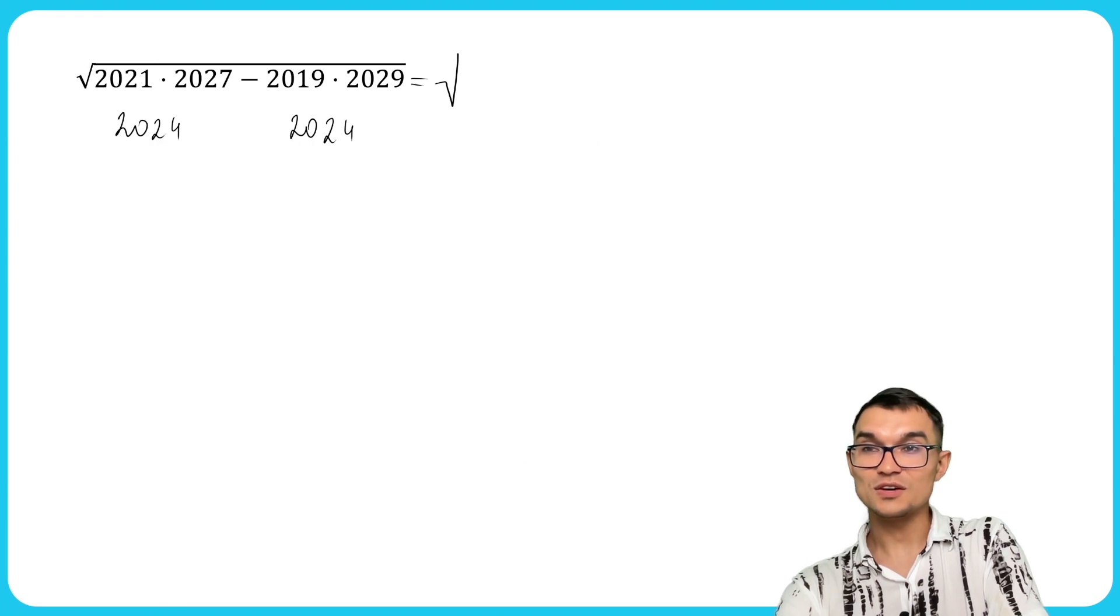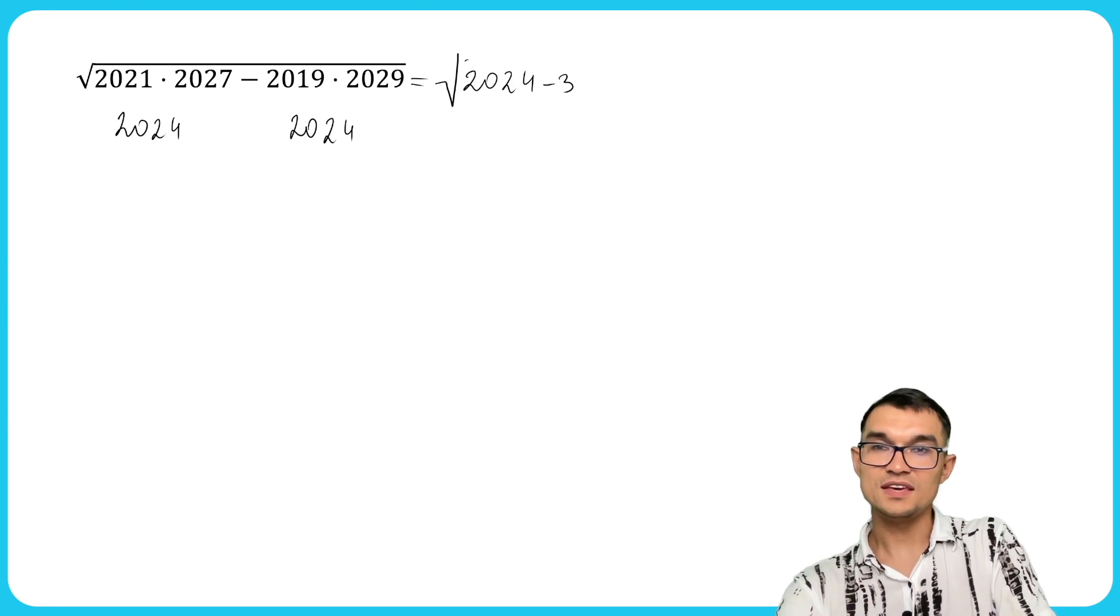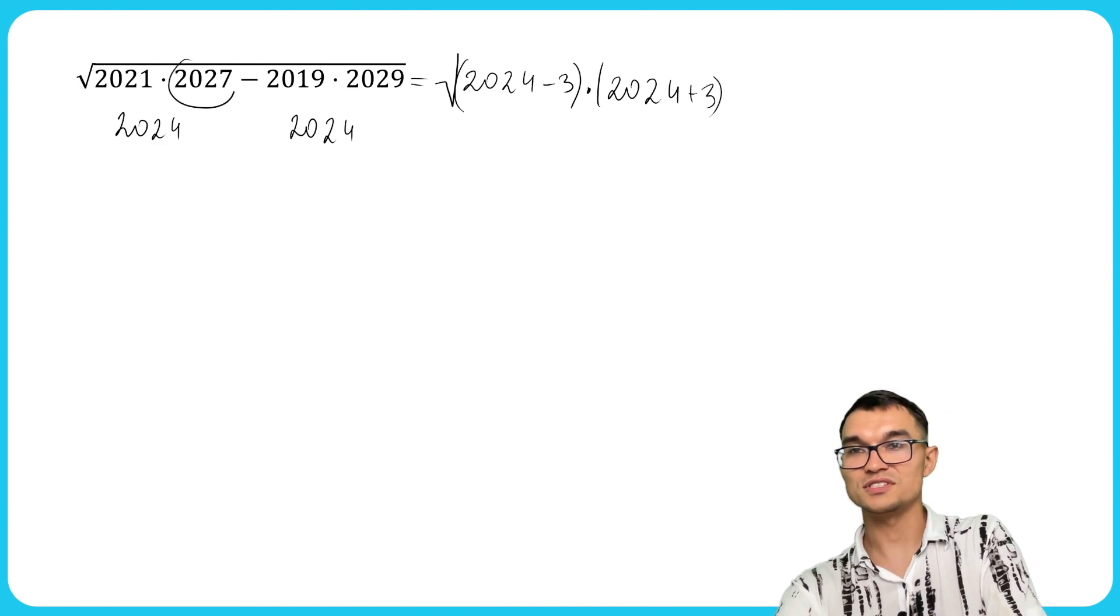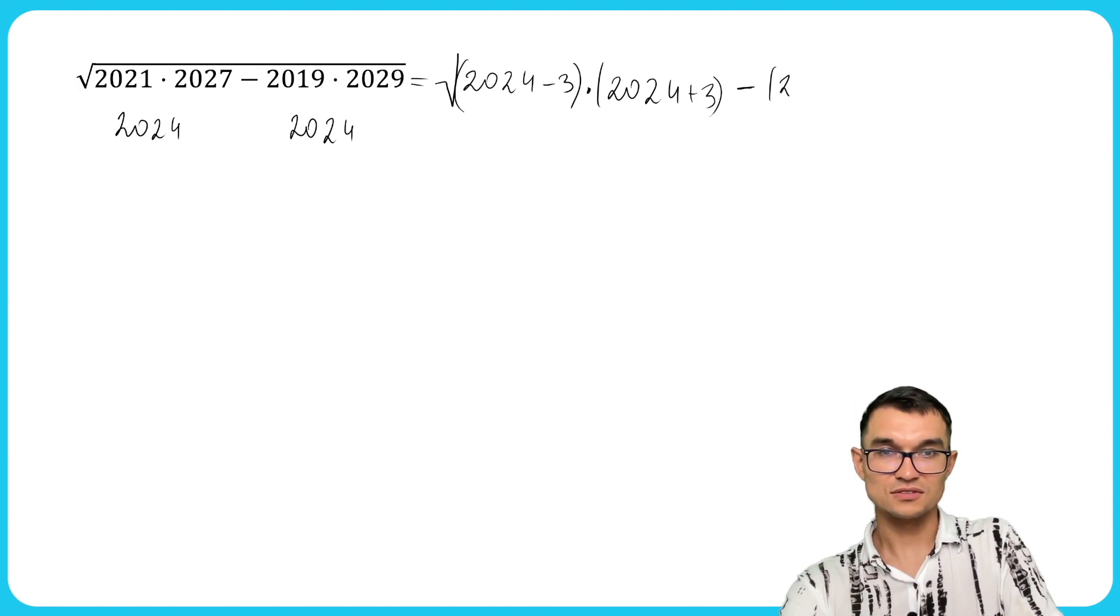So what does this mean? It means that we can put 2024 minus 3 instead of 2021. And this will be multiplied by 2024 plus 3 instead of 2027. And let's do the same thing for these two numbers. So 2019 is 2024 minus 5.